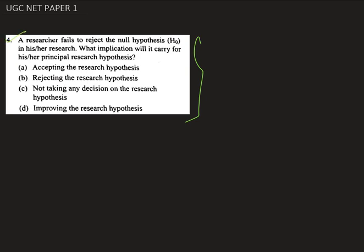In this question, we are asked that if a researcher fails to reject null hypothesis in his or her research, what implication will it carry for his or her principal research hypothesis? Here we are given four options: accepting the research hypothesis, rejecting the research hypothesis, not taking any decision on the research hypothesis, and improving the research hypothesis.